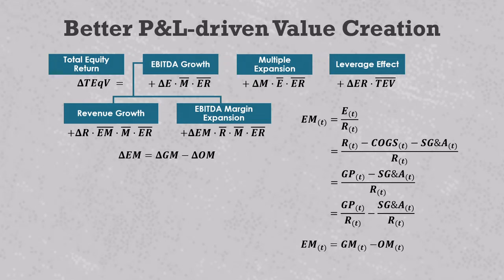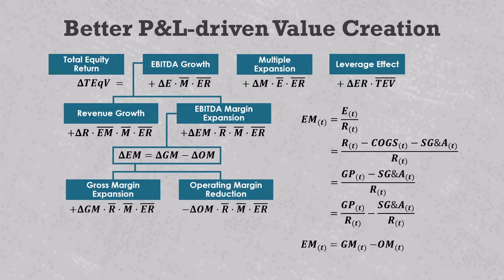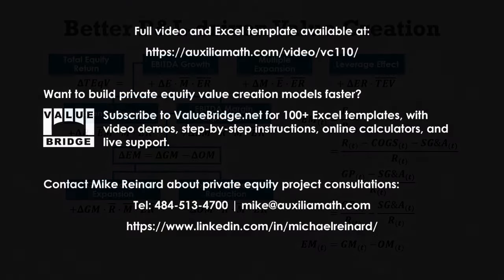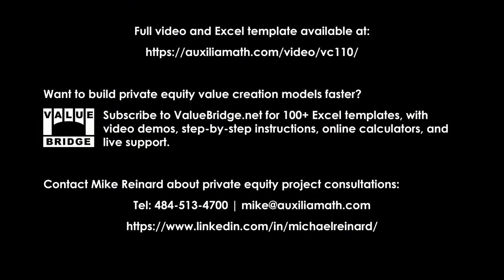You can now plug this into the EBITDA margin expansion above, giving us two new value drivers: gross margin expansion, which is driven by an increase in the gross profit margin, and operating leverage, which is driven by a decrease in the operating expense margin.